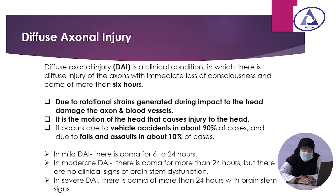A very important part of brain injury is diffuse axonal injury. It is a condition in which there is diffuse injury to the axons with immediate loss of consciousness and coma of more than 6 hours, due to rotational strains generated by impact to the head causing damage to axons and blood vessels. It is the motion of the head that causes the injury. It occurs in vehicle accidents in about 90 percent of cases, and falls from height or assault in 10 percent of cases. It is categorized as mild, moderate, and severe diffuse axonal injury.